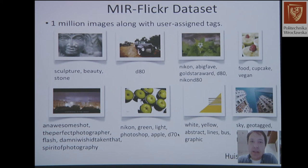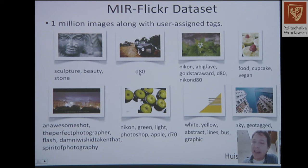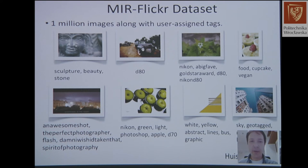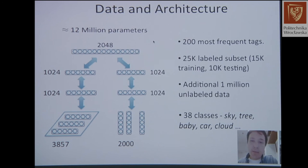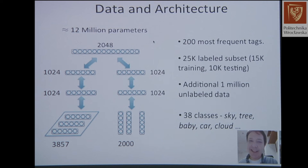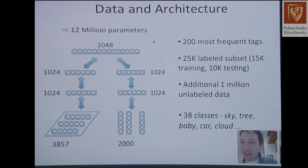The Flickr dataset has one million examples. Tags like 'sculpture, stone' tell you a lot about what's in the image, but sometimes you just get the camera model — D8 — which isn't useful. To deal with noise, we need good generative models. The bi-modal architecture uses about 200ms for labels and tags, one million unlabeled examples, and about 12 million parameters. Statisticians find 12 million parameters a lot, but at Google they have billions, so the scale is relative to who you're talking to.